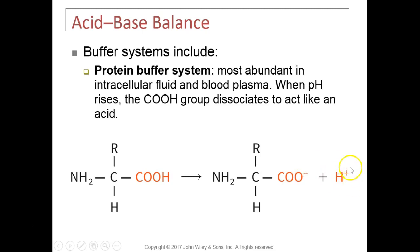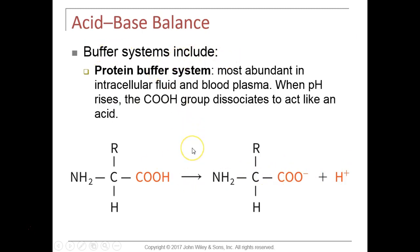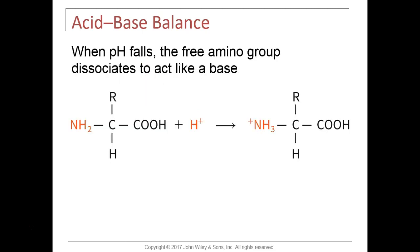We have a lot of proteins in our blood, including hemoglobin. If the blood pH is too low, the same amino acid on proteins can act as a buffer by absorbing the extra acid. The hydrogen binds to the amino group, which also becomes charged — a cation — absorbing that acid and pulling it out of solution to bring the pH back up.